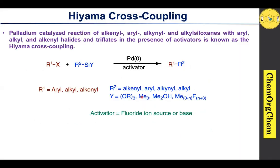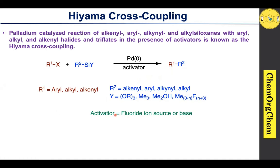The Hiyama cross-coupling reaction is a palladium-catalyzed cross-coupling reaction of organotriflates or organohalides with organosilanes to produce the corresponding carbon-carbon coupling product. Just like in Suzuki cross-coupling reactions where we need a base activator to activate the boron reagent, here we need to activate the silyl reagent, since silane reagents have somewhat lower reactivity compared to other coupling reagents. The lower reactivity of the silicon-carbon bond requires the use of an activating reagent.